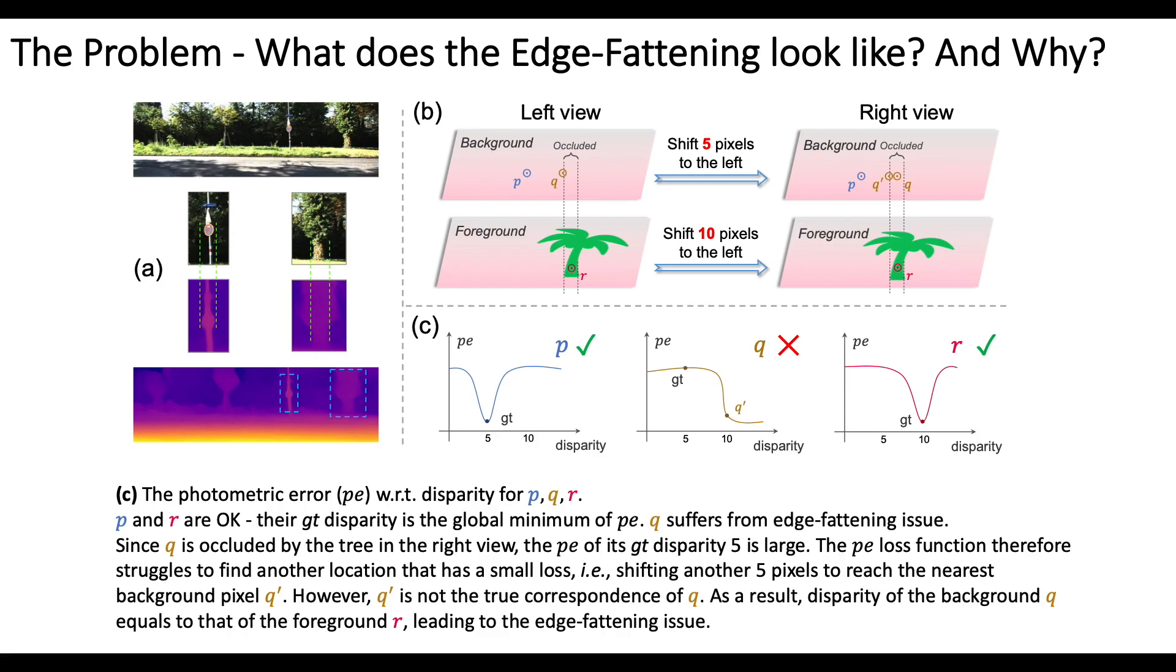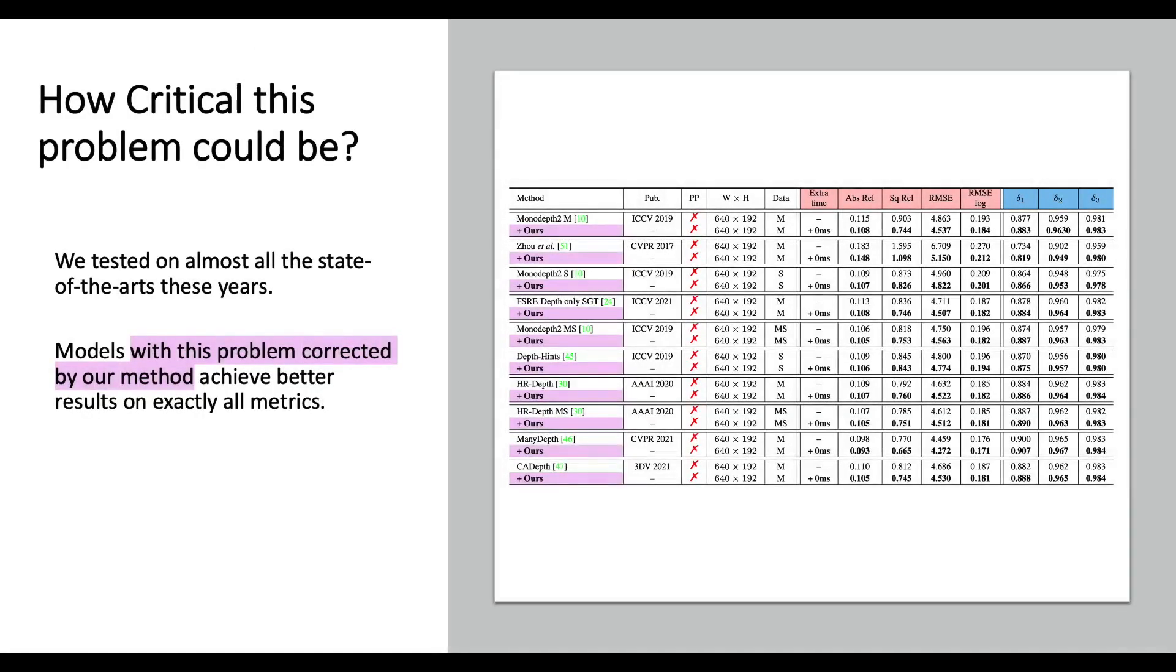However, Q' is not the true correspondence of Q. As a result, disparity of the background Q equals to that of the foreground R, leading to the edge fattening issue.